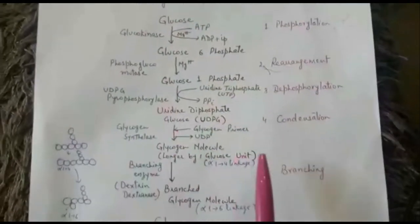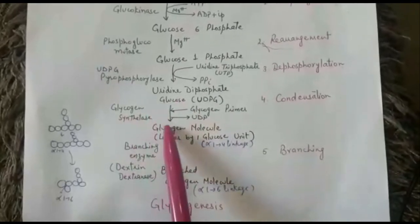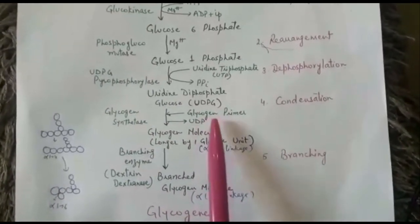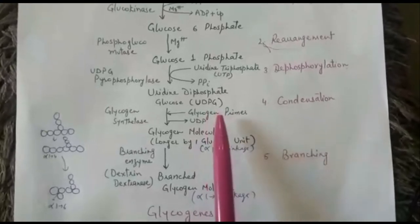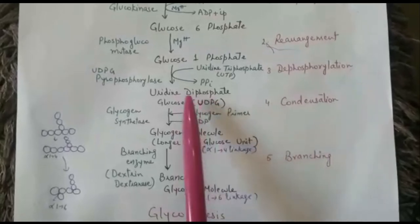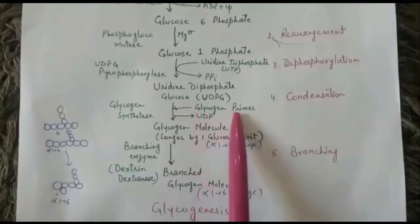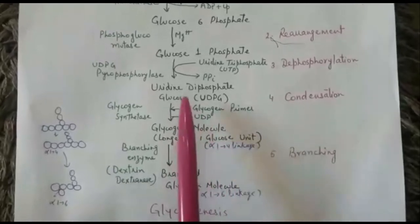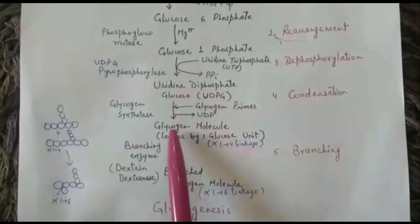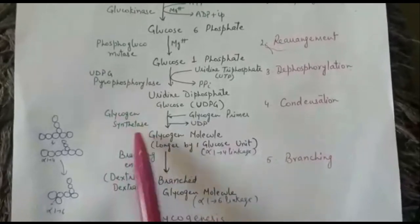The next step is condensation. UDP-glucose condenses with the glycogen primer — the glycogen primer is a small glycogen molecule having few alpha-1,4 and alpha-1,6 linkages, whereas glycogen itself is a very large molecule. The glucose from UDP-glucose attaches to the glycogen primer at one end, forming an alpha-1,4 linkage. The glycogen primer becomes longer by one glucose unit, and UDP is released. The name of the enzyme is glycogen synthetase, because it involves synthesis of glycogen.